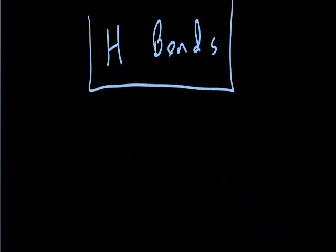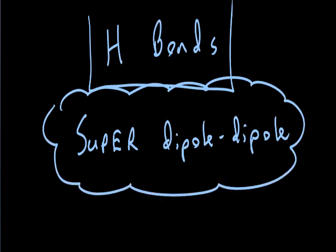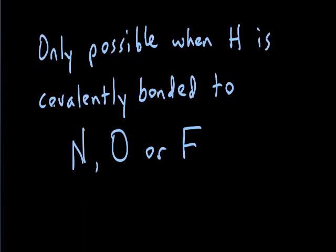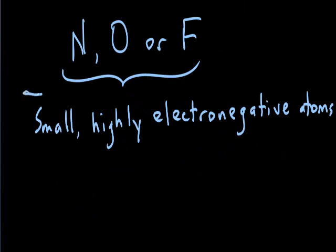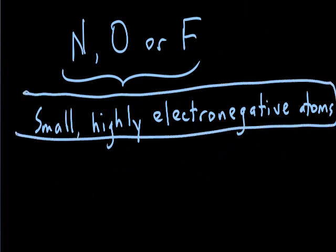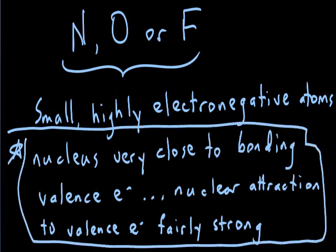The last force is hydrogen bonds — the strongest intermolecular attractive force, essentially a supercharged dipole-dipole force. Hydrogen bonds are only possible when hydrogen is covalently bonded in a molecule to nitrogen, oxygen, or fluorine. These are small, highly electronegative atoms, and their nuclei remain very close to the bonding valence electrons, which is key to the creation of hydrogen bonds.